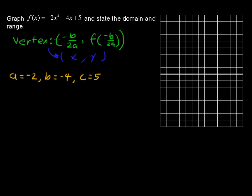Let's find the x-coordinate of the vertex, that is -b/2a. So -b/2a equals the opposite of -4, and that's positive 4.